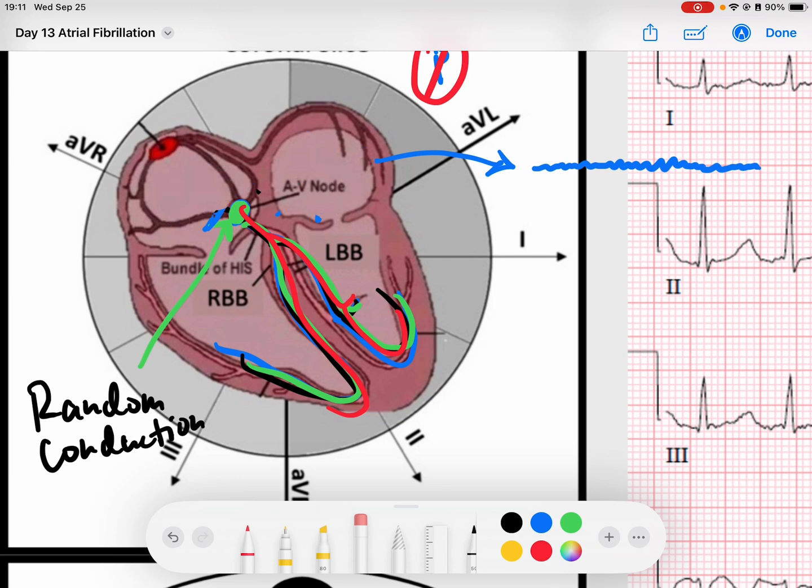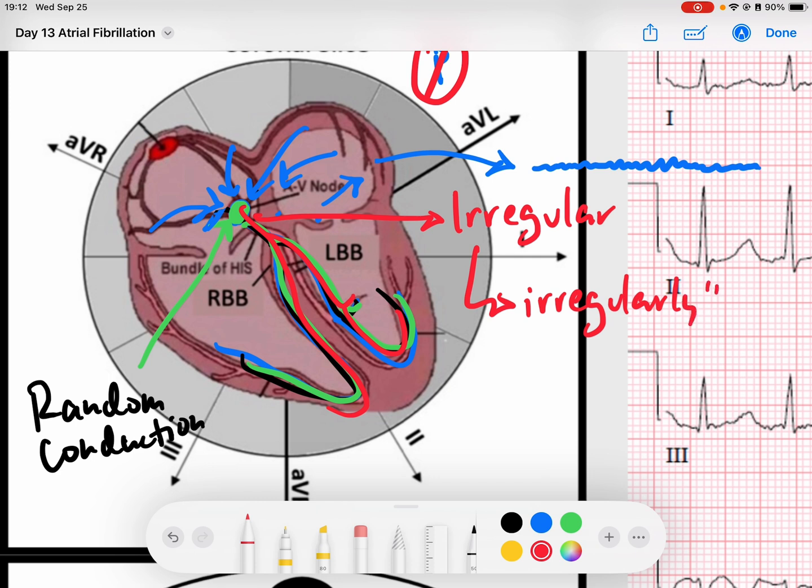But in AFib, what ends up happening is the AV node is just constantly getting bombarded with these fibrillatory waves and it can't always send them down, but it can every so often. We end up getting random conduction to the ventricles and that creates a rhythm, a QRS complex that is very irregular. It is so irregular to the point that we actually call it irregularly irregular, meaning that there's no pattern.